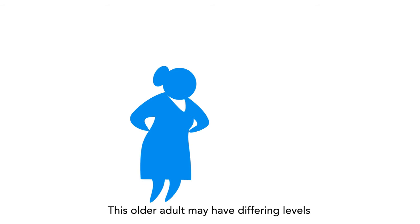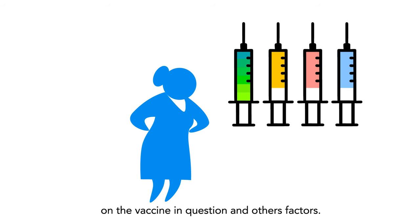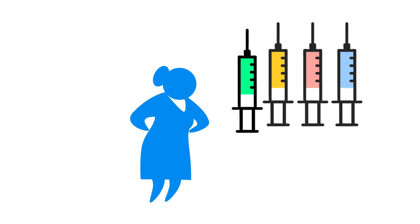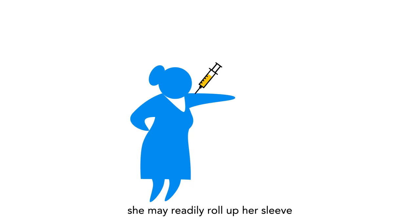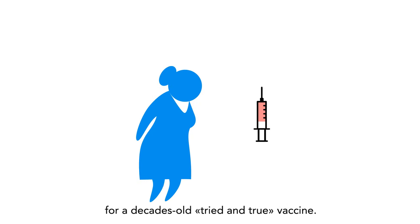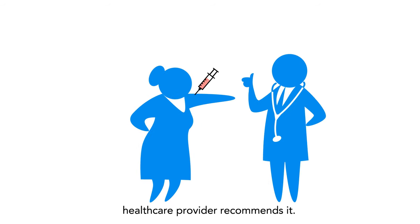This older adult may have differing levels of vaccine confidence depending on the vaccine in question and other factors. For instance, although she might not trust a new vaccine that she sees as unproven, she may readily roll up her sleeves for a decades-old tried-and-true vaccine. She may also decide to get the new vaccine if her well-trained healthcare provider recommends it.